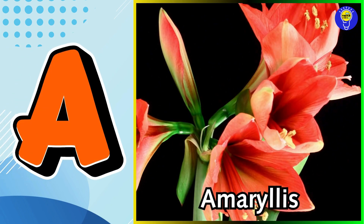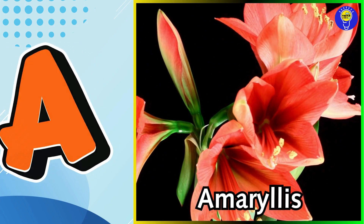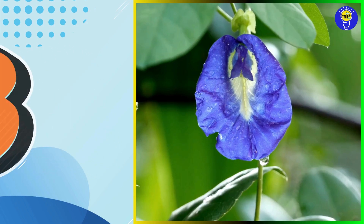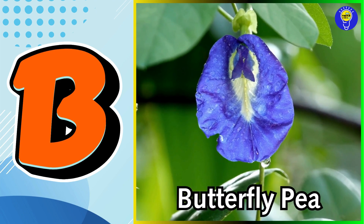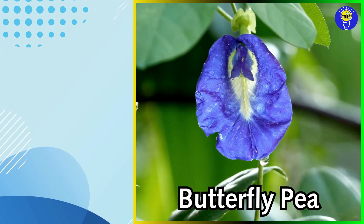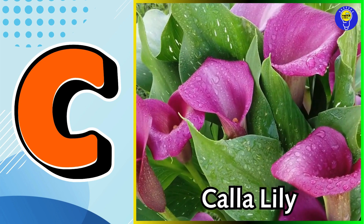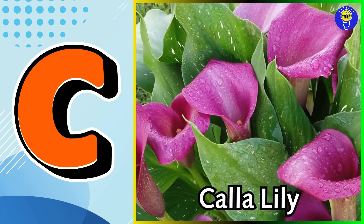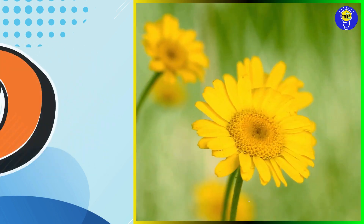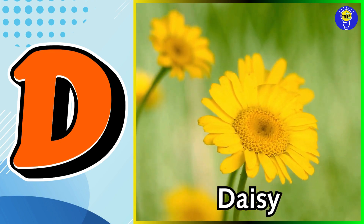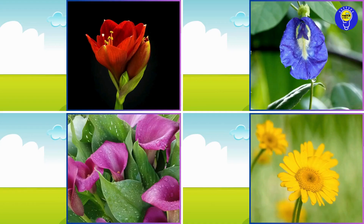A is for amaryllis flower. B is for butterfly pea flower. C is for calla lily flower. D is for daisy flower.